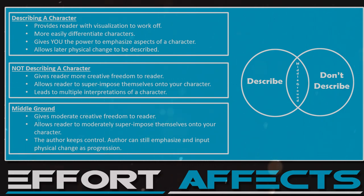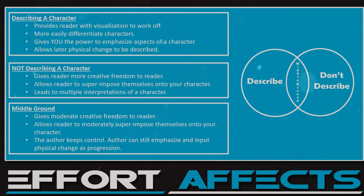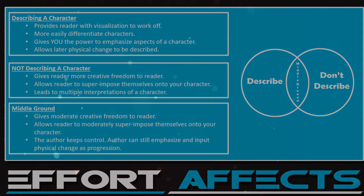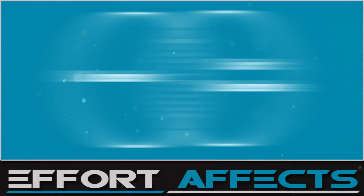It allows the reader to differentiate characters more easily, and it gives you the power to describe and also emphasize certain aspects of your character you want the reader to notice. This leads on to character change as well — say as your story progresses your character starts to get stubble; this can be used as a physical representation to show hardships coming along. Without a description at all, this can be difficult to implement.